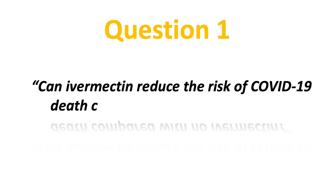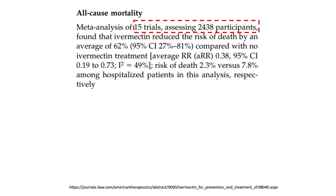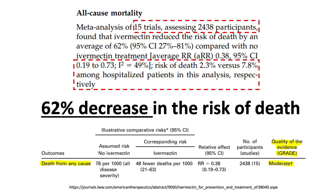Can ivermectin reduce the risk of COVID-19 death compared with no ivermectin? To address this question, the meta-analysis looked at 15 trials with 2,438 participants. For hospitalized patients on ivermectin, the risk of death is 2.3%, and without ivermectin, the risk of death is 7.8%. They concluded the average risk ratio is 0.38, meaning there is a 62% decrease in the risk of death. The quality of evidence is moderate.